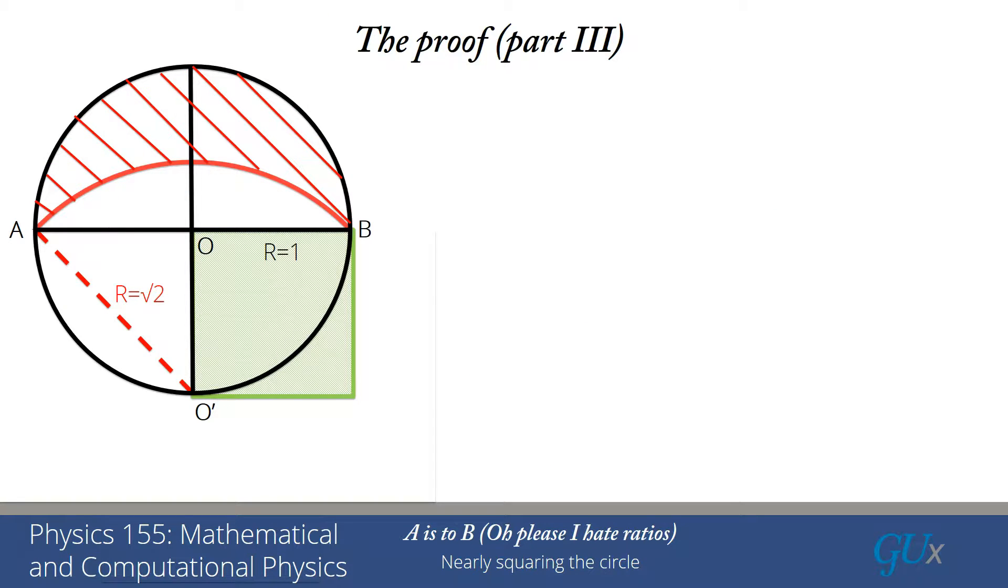So to summarize here, the area of the semicircle minus gamma is equal to that red hatched area. And we've just shown that that red hatched area has area 1, which is indeed the area of the square, which is the green hatched area. So we've shown the area of that crescent given by pi over 2 minus gamma equals 1 is indeed equal to the area of the green square.